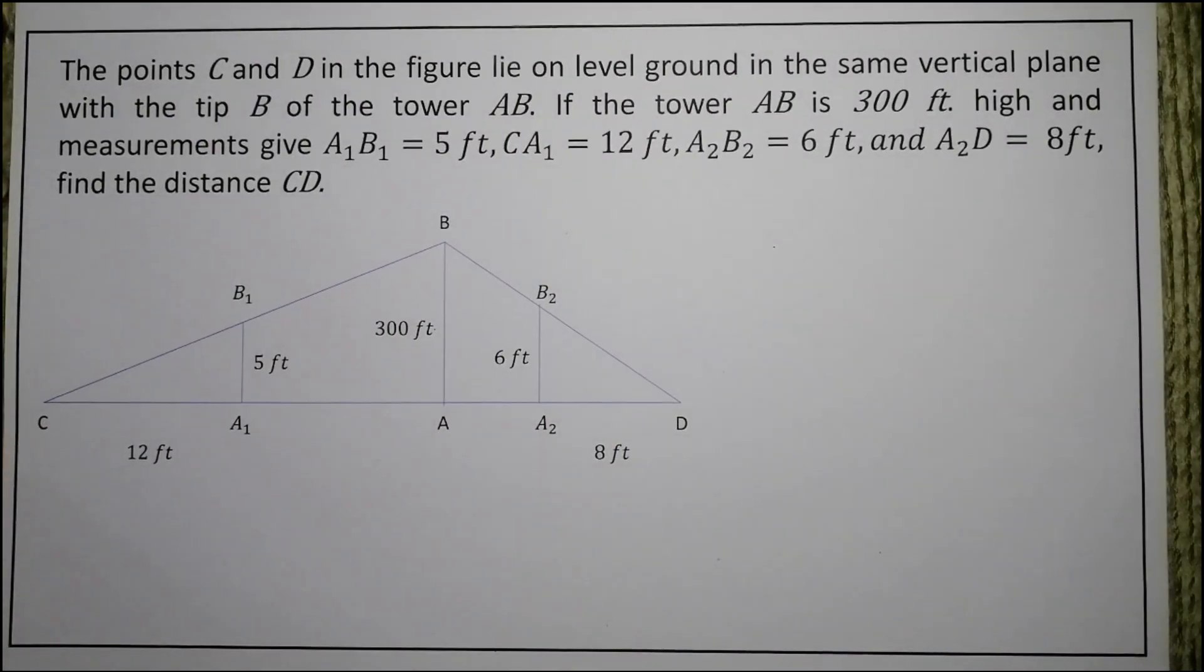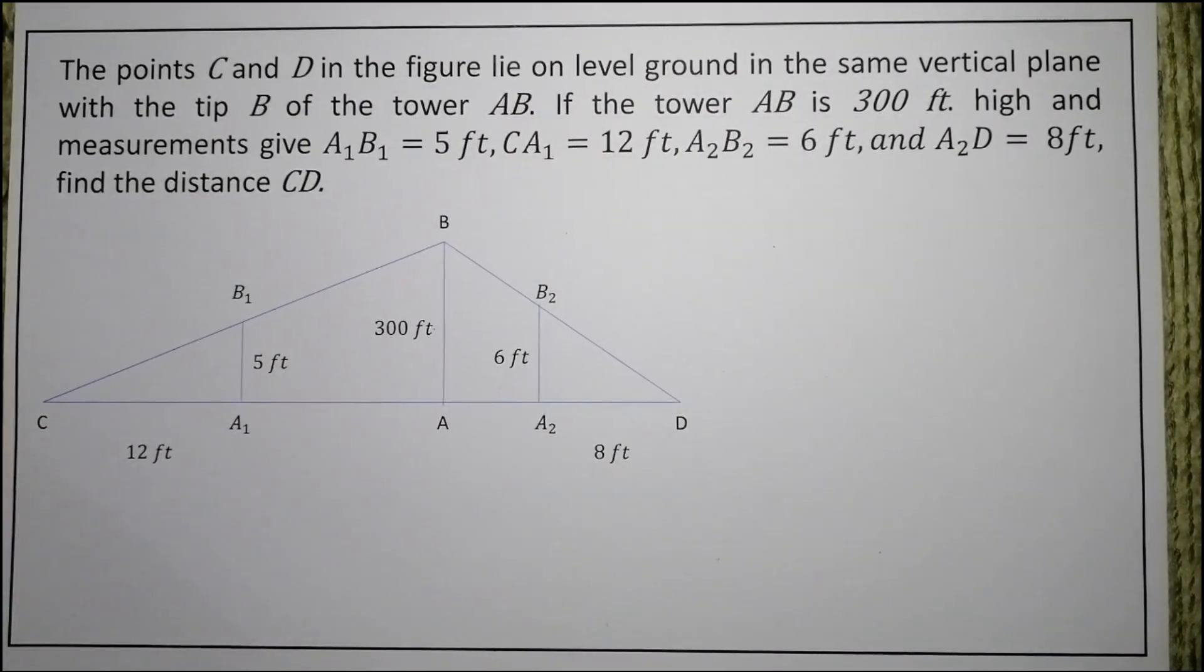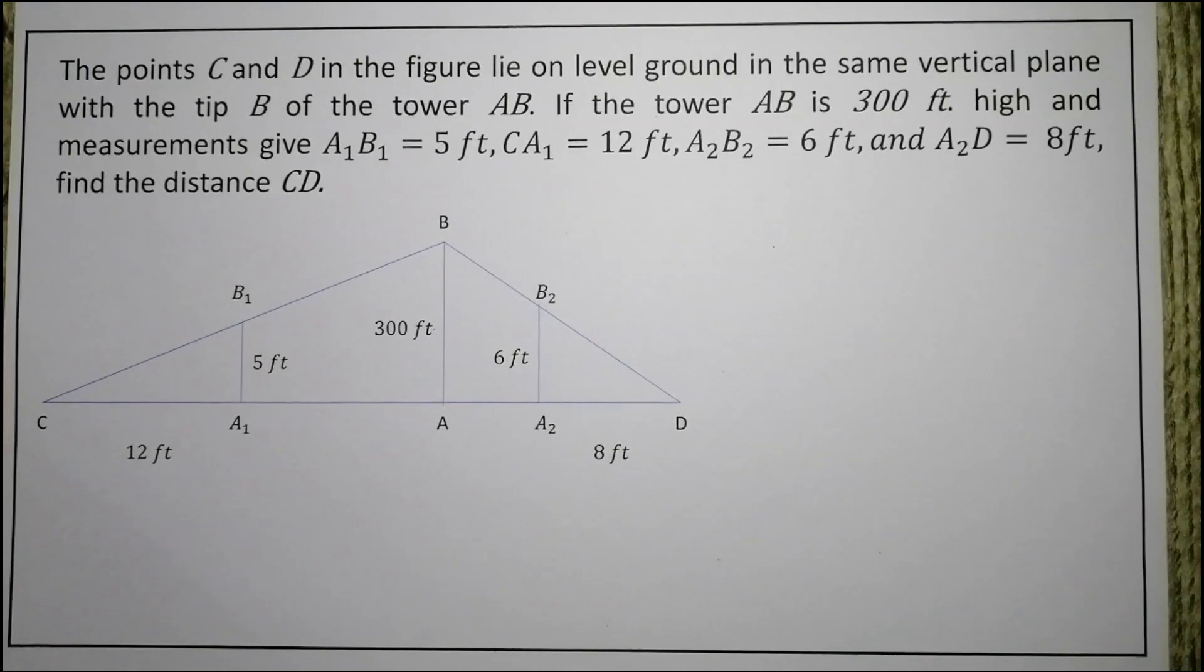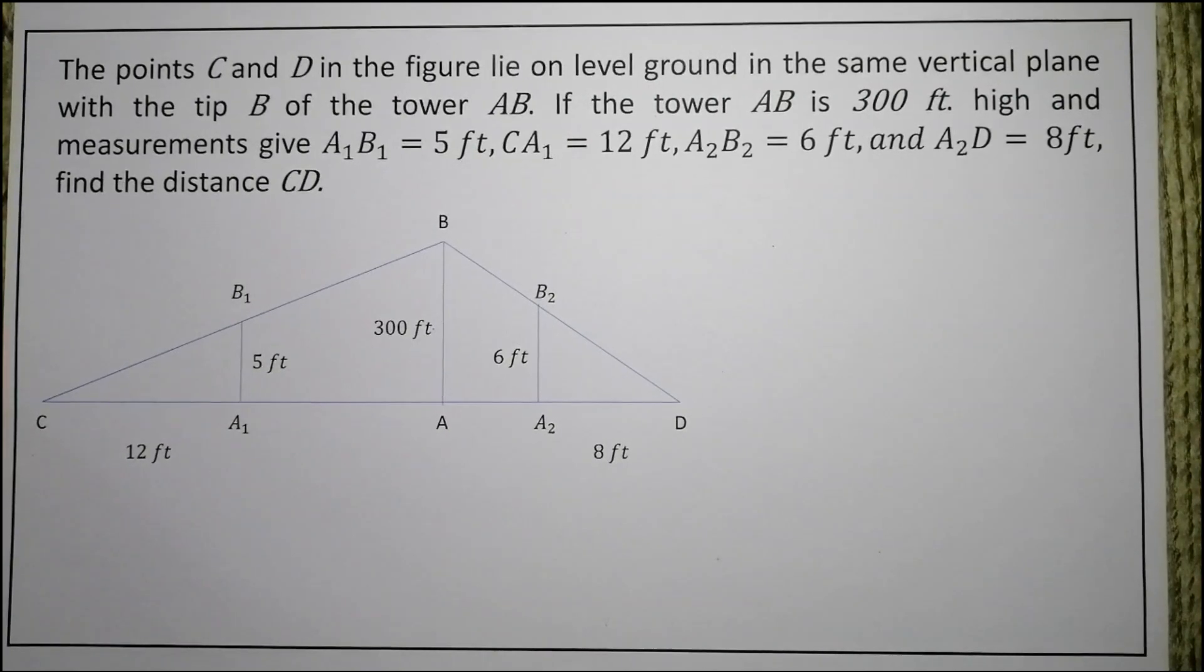The points C and D in the figure lie on level ground in the same vertical plane with the tip B of the tower AB. If the tower AB is 300 feet high and measurements give A₁B₁ as 5 feet, CA₁ is equal to 12 feet, A₂B₂ is equal to 6 feet, and A₂D is equal to 8 feet, find the distance CD.